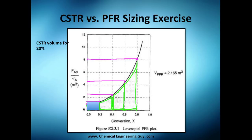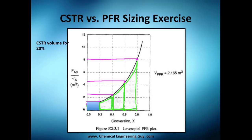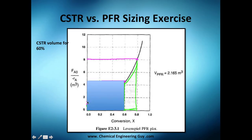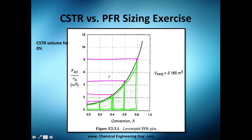Now for the CSTRs: at 0% conversion you have no volume, at 20% conversion you get a rectangle, at 40% the rectangle increases, and at 80% it goes even higher. If you compare CSTR to PFR volumes, the CSTR always has an excess — this part here is the excess, this part here is also an excess, and so on.